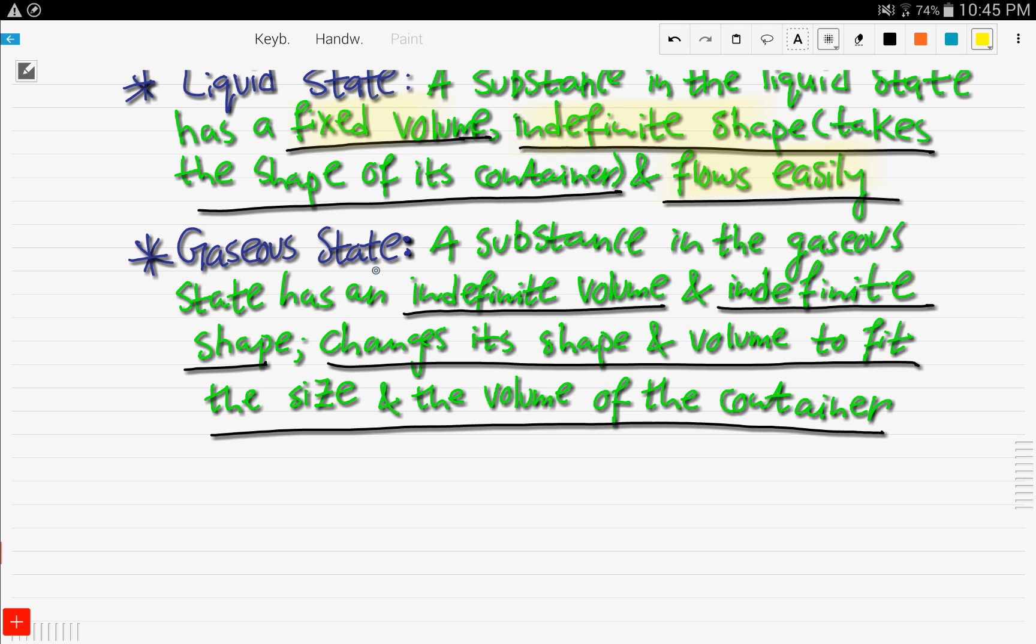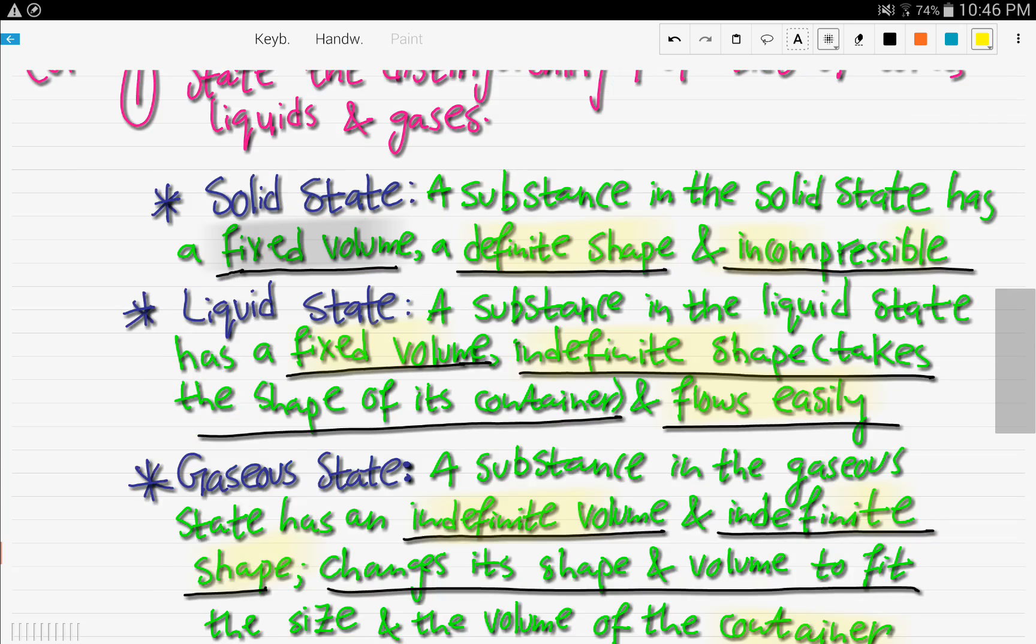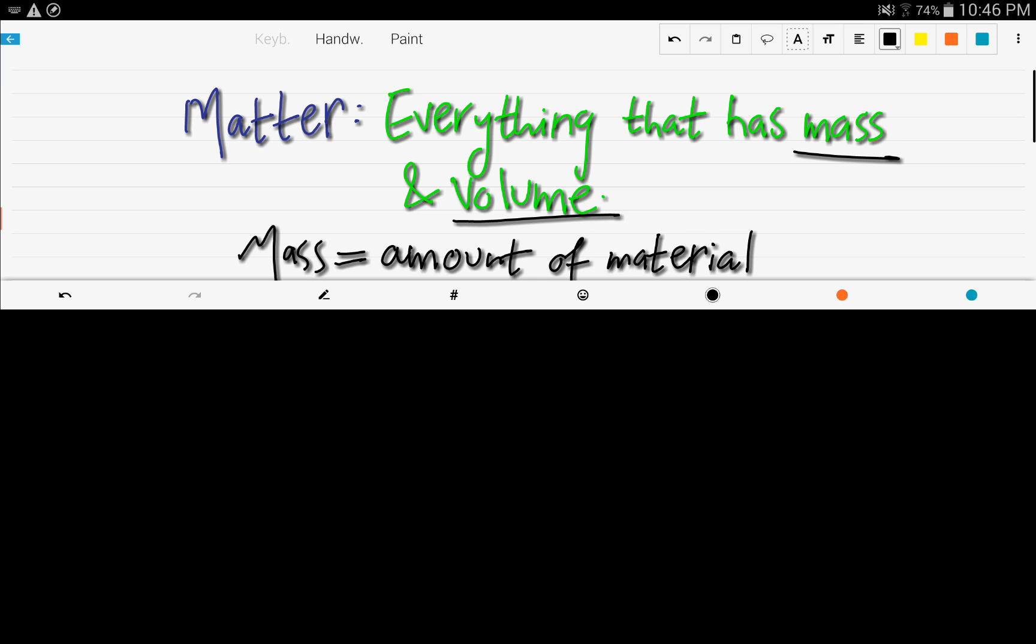The third thing is the gaseous state. A substance in the gaseous state has an indefinite volume and indefinite shape. So it's the complete opposite of the liquid and the solid. It changes its shape and volume to fit the size and volume of the container. So that was a pretty easy objective to cover. Let's move on to the next objective.